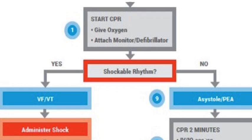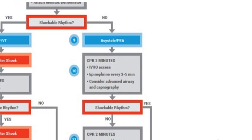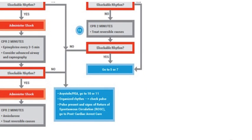If there was not a shockable rhythm, proceed down to the other side of the algorithm. If there was not an initial shockable rhythm — asystole or PEA — perform CPR for two minutes while obtaining IV access. Administer epinephrine every three to five minutes, and consider placing an advanced airway and monitoring via capnography. Reassess for a shockable rhythm. If yes, go to steps five or seven. If not, continue to perform CPR for two minutes and treat reversible causes — H's and T's. Then check for a shockable rhythm again.